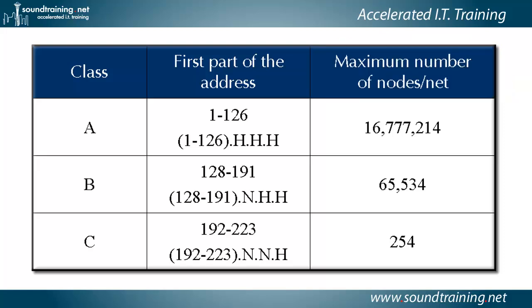If you think about the class A network, there are three octets that make up the host portion of the address. With 8 bits per octet, that gives us a total of 24 bits to work with for the host portion of a class A address.